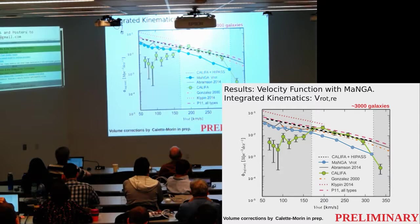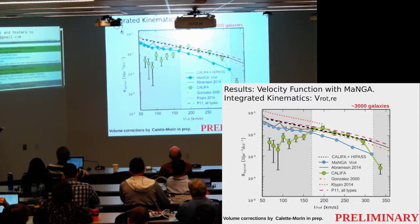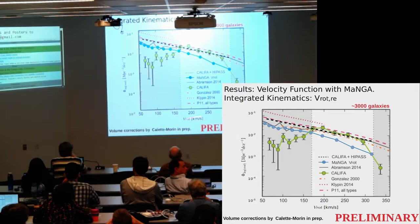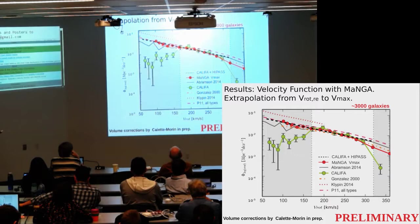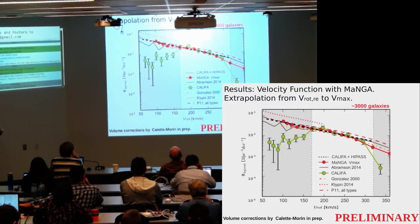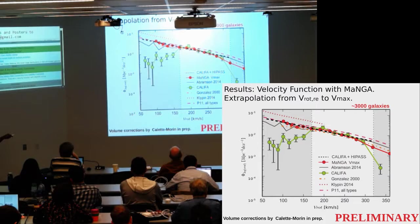The goal of this project is to construct the velocity function using MaNGA galaxies. I show in blue symbols the velocity function using the rotation velocity at one effective radius — as expected, we underestimate the velocity function. We use the volume correction by Calette-Avila-Reese. After applying the extrapolation to go from V_rot at one effective radius to VMAX, we obtain the red symbols, and we are in agreement with CALIFA and CALIFA plus H1, and also with Papastaris 2011 using the H1 ALFALFA survey, between 100 and 300 km/s. At high velocities, there are discrepancies, so this extrapolation can be tricky.